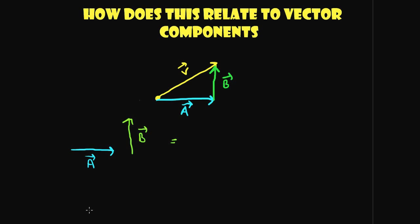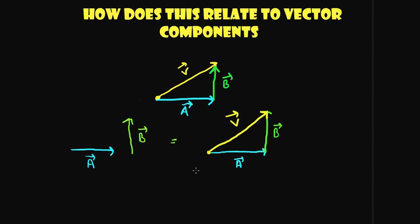If I pull vector A aside and vector B aside and ask you to add them using the tip-to-tail method, you'd take vector A, then place the tail of vector B at the tip of vector A, and draw a line from the tail of vector A to the tip of vector B — and there is vector V. Just as 5 is the sum of 3 plus 2, vector V is the sum of vector A plus vector B.